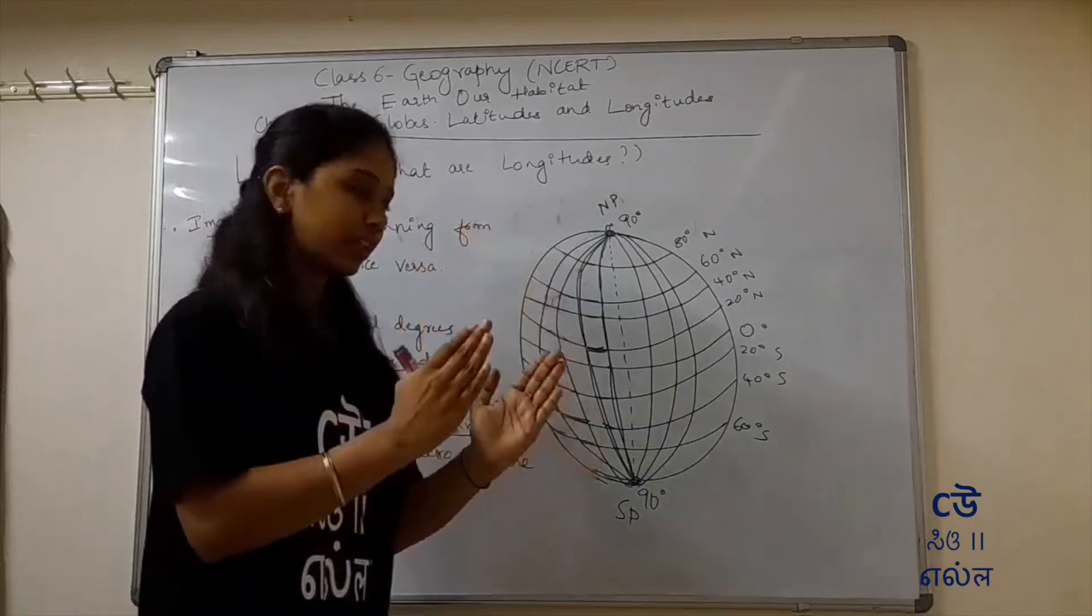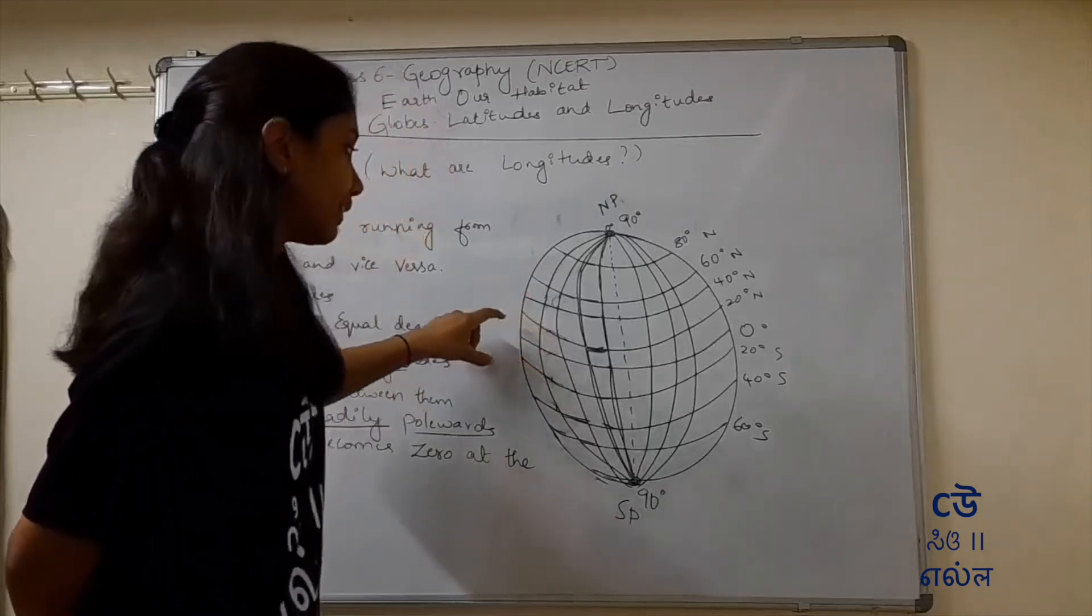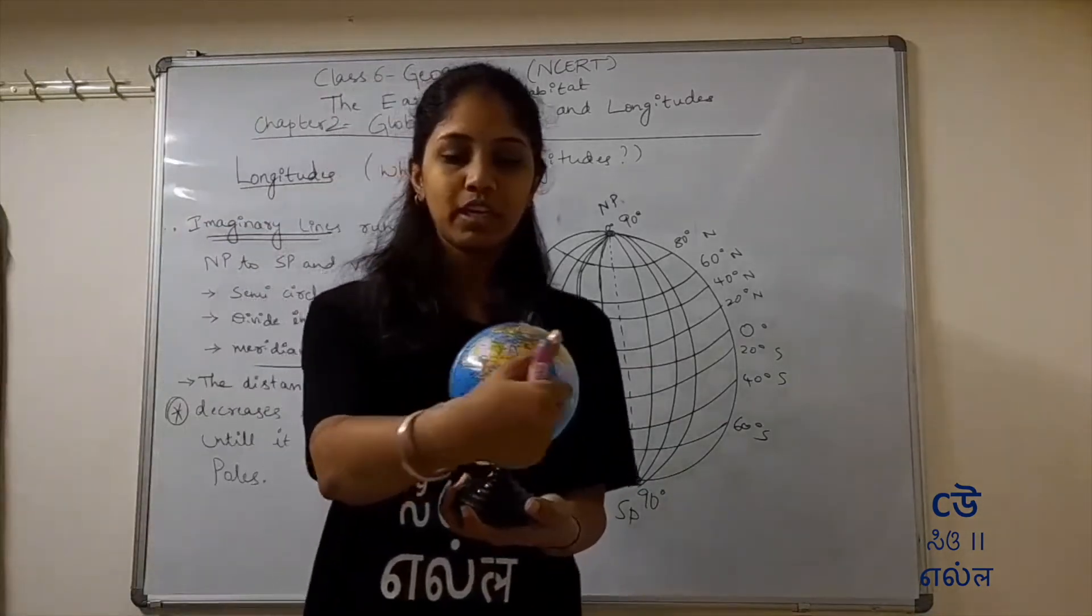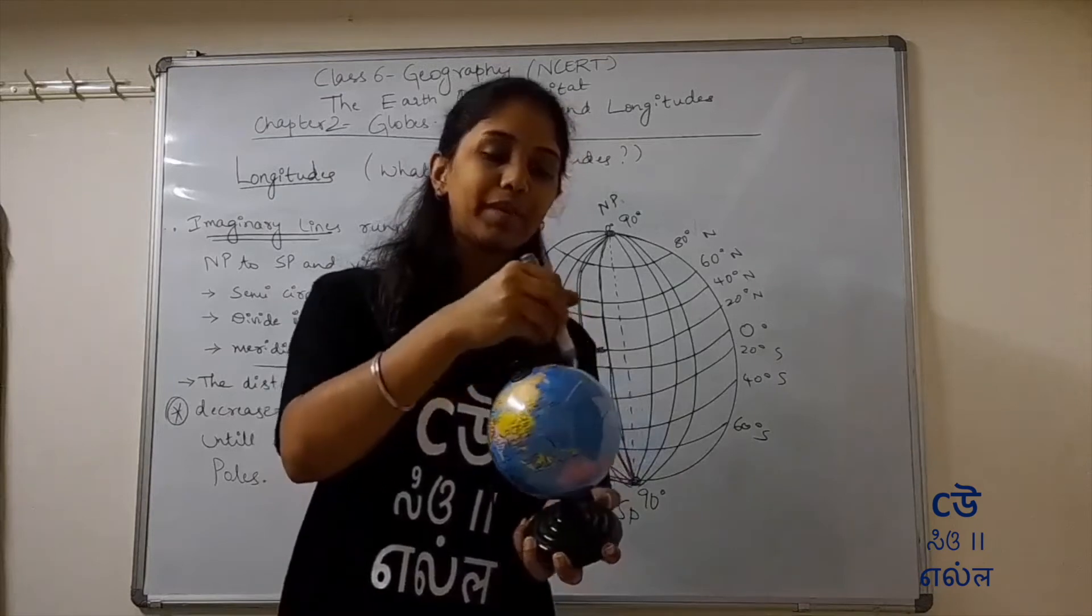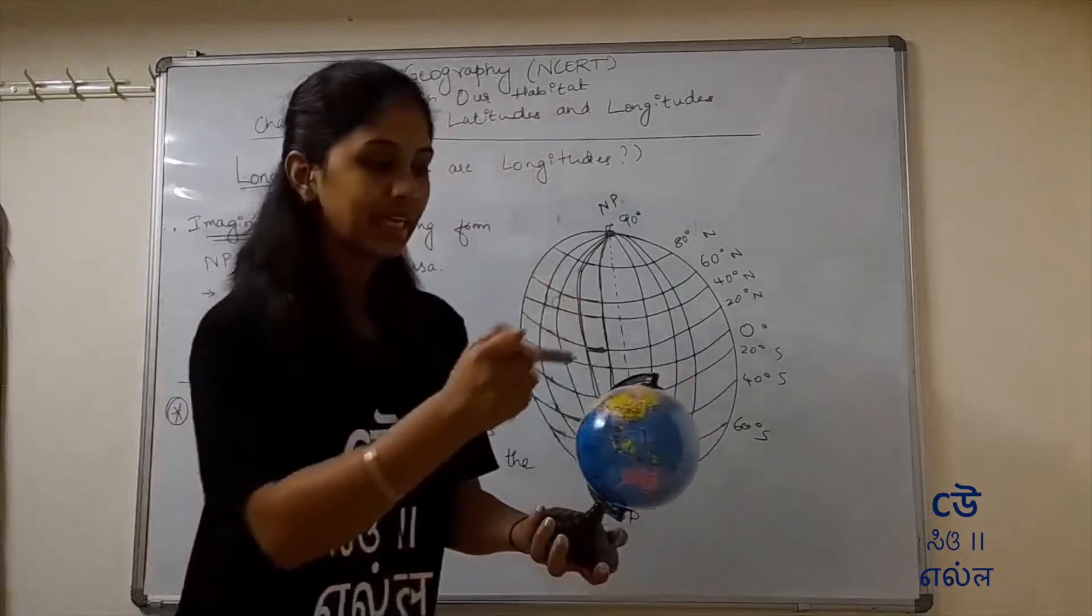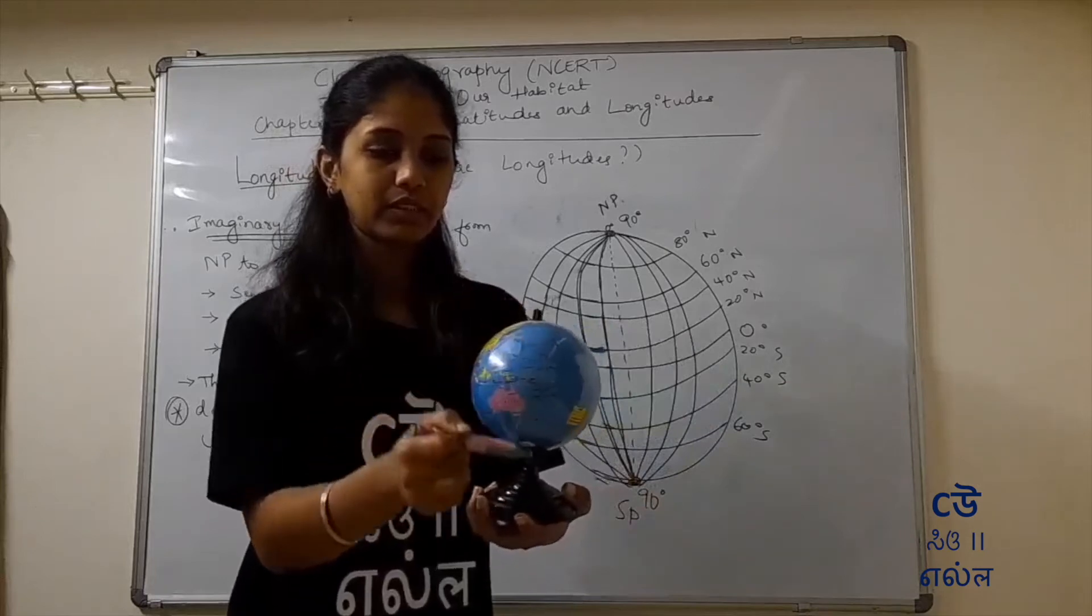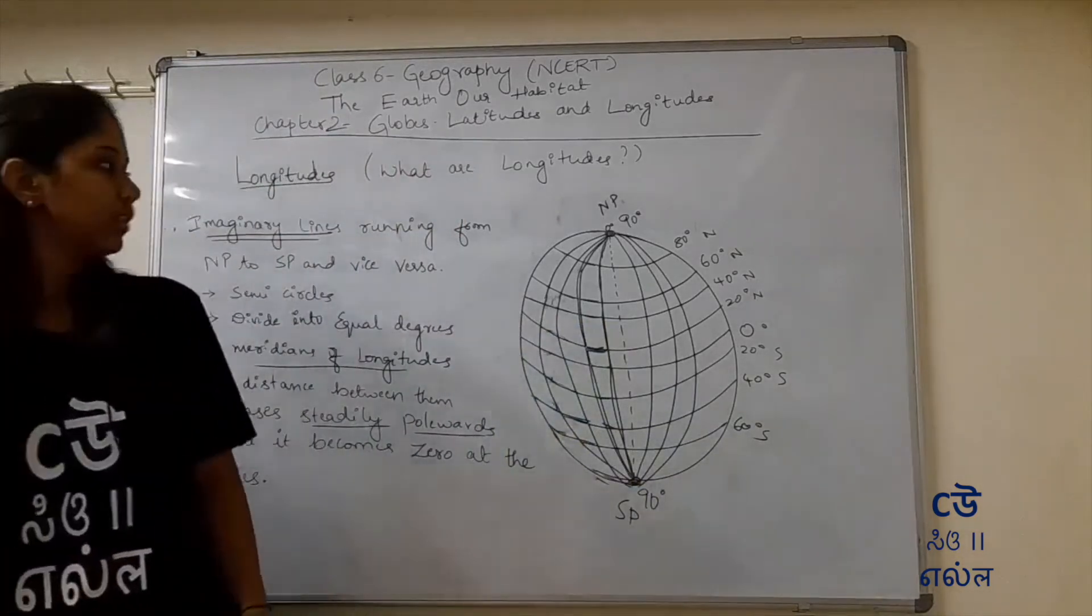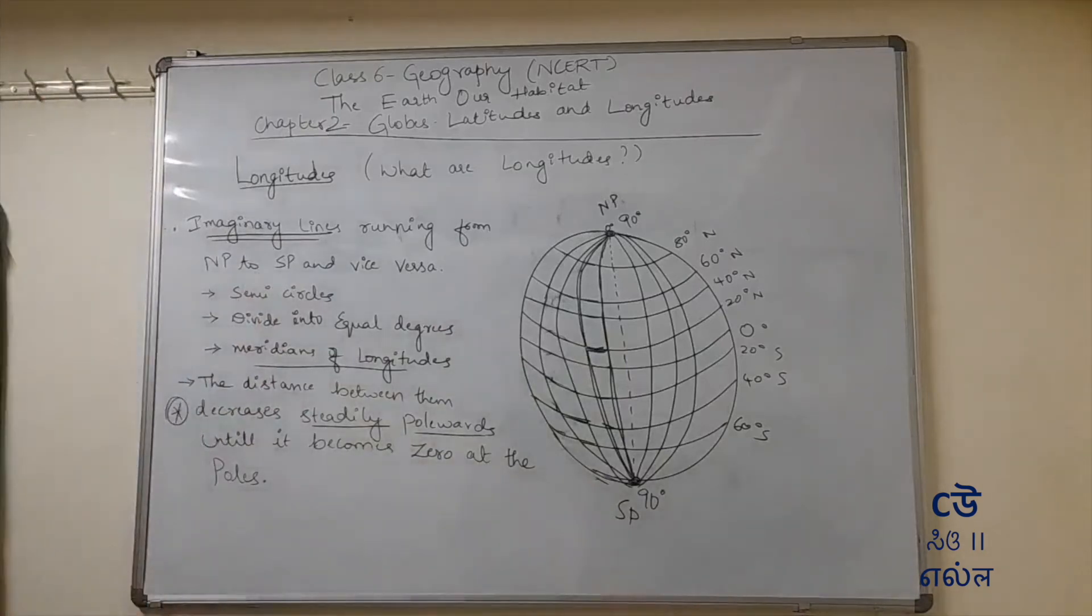So just imaginary lines running from north pole to south pole. Semicircles and meridians of longitudes. They are divided into equal degrees, one-one degree divided. Decreases steadily polewards until it becomes zero at the poles. So at equator the distance between them is more. In case of latitudes, if you want the center, you'll look at the full circle. But whereas in case of longitudes, if you want the centers down at north pole or south pole.